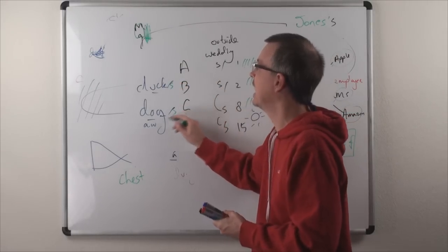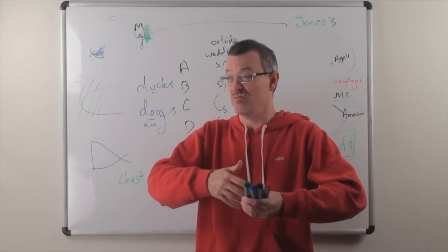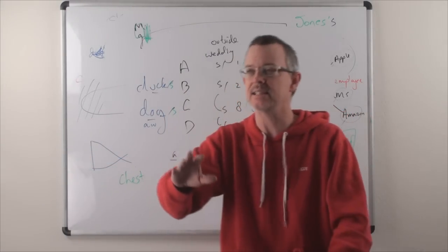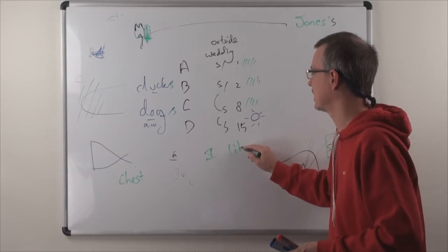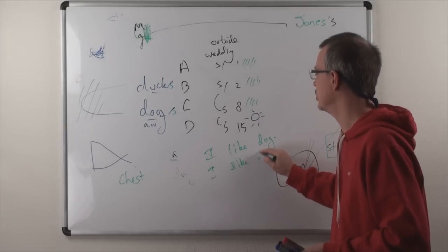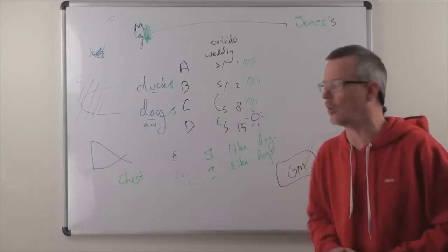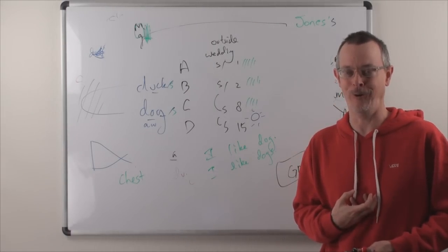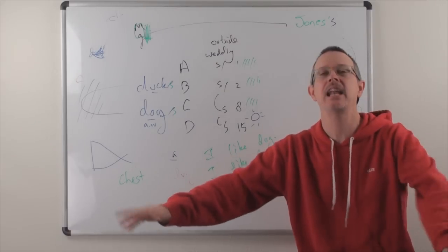Also, do not say ducks and dogs. I like ducks. I love eating dogs. That means dogs, like the animals. So the sentence is, I like dog. I like dogs. Extremely different sentences. Be careful. I like dog means I like to eat dog. Delicious. I like dogs means I like the animals as pets.